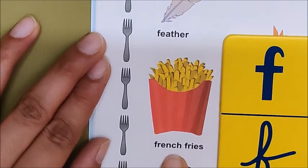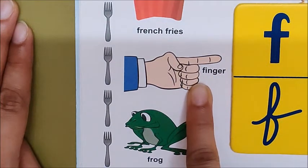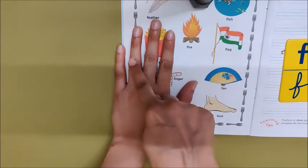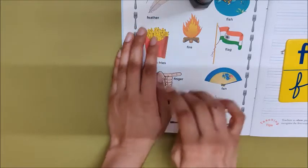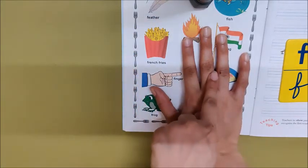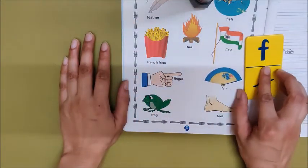Let us go to the next picture. F for French fries. French fries is made with potato. And French fries are salty in taste. F for finger. Children, how many fingers do we have? Let us count. 1, 2, 3, 4, 5, 6, 7, 8, 9, 10. We have 10 F for fingers.